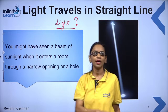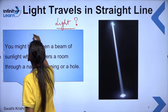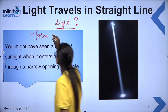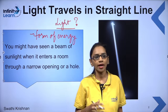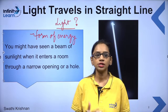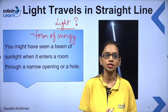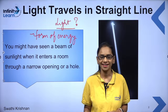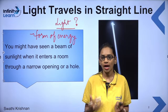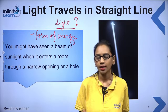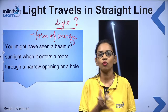Light is basically a form of energy. Light is so important because it helps us see whatever is surrounding us. Whatever is around us, we are able to perceive because of light. When light falls and reaches our eyes, we are able to see this wonderful world. That is why we can say light is very important — without light, we would not be able to see anything.